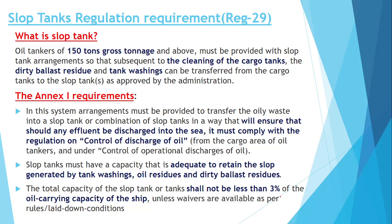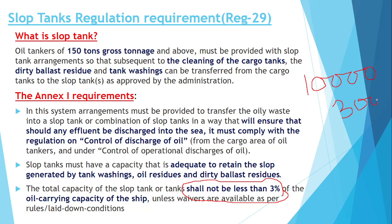The capacity of a slop tank can be more than required, but it should not be less than 3%. For example, if a ship has an oil carrying capacity of 10,000 tonnes, you should have at least 300 tonnes of slop tank capacity.